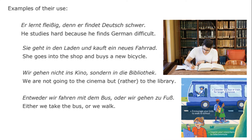If we consider the textbook's sentences as examples: "Er lernt fleißig, denn er findet Deutsch schwer" — he studies hard because he finds German difficult. These two are so related, almost in terms of one providing an explanation for the other, that we should really join them into one sentence, and the conjunction "denn" allows us to do just that.